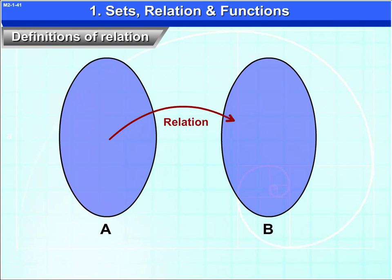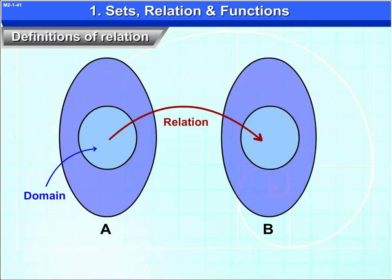In a binary relation from A to B, all the elements of A which are related form the domain and all the elements of B which are related form the range.